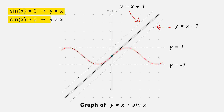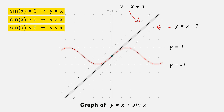When sin x is greater than 0, we get y equal to x plus sin x, which is greater than x. And when sin x is less than 0, we get y equal to x plus sin x, which is less than x. So from these conditions, we can draw the graph of x plus sin x.